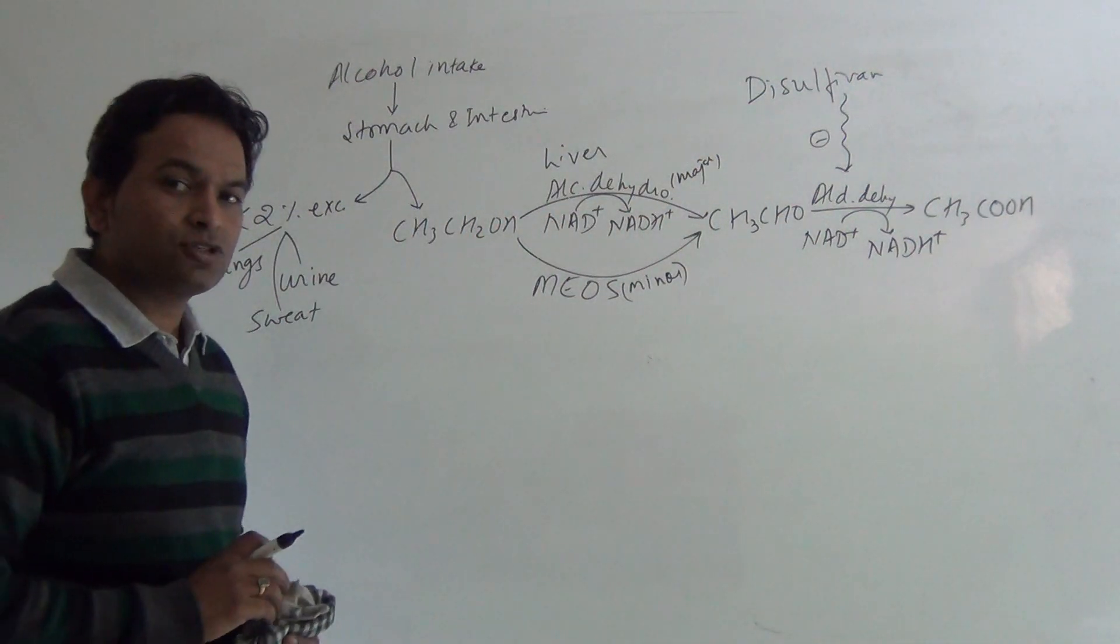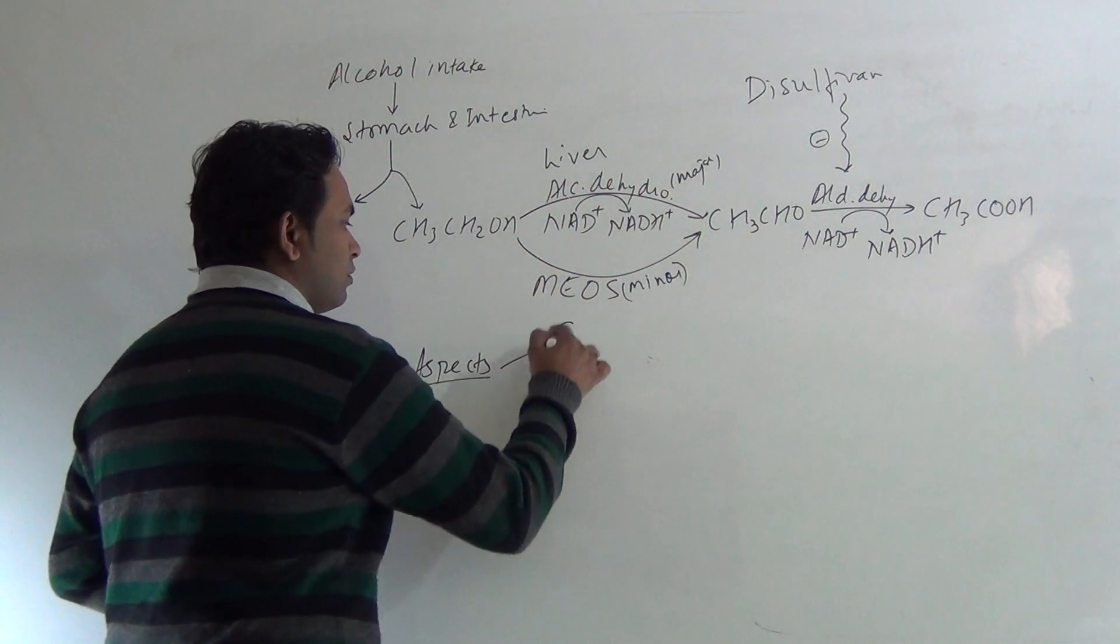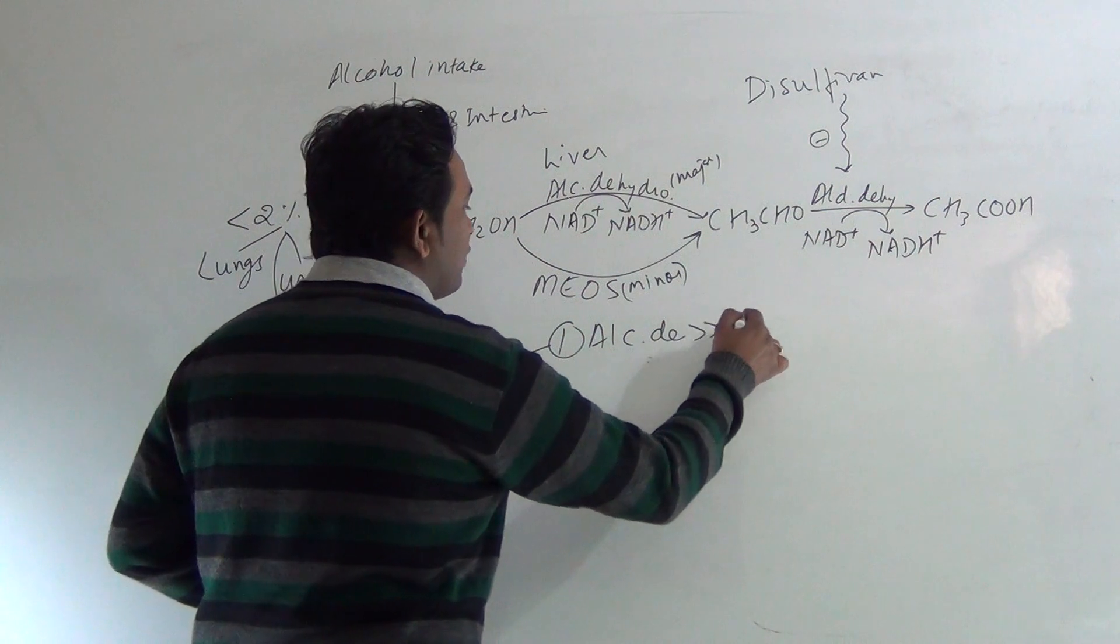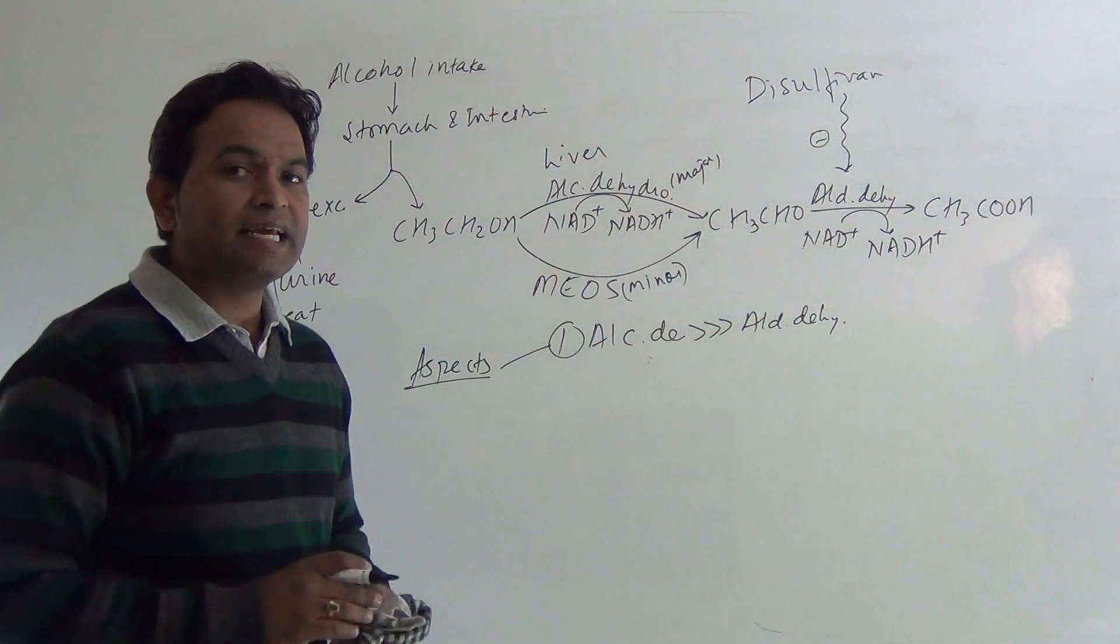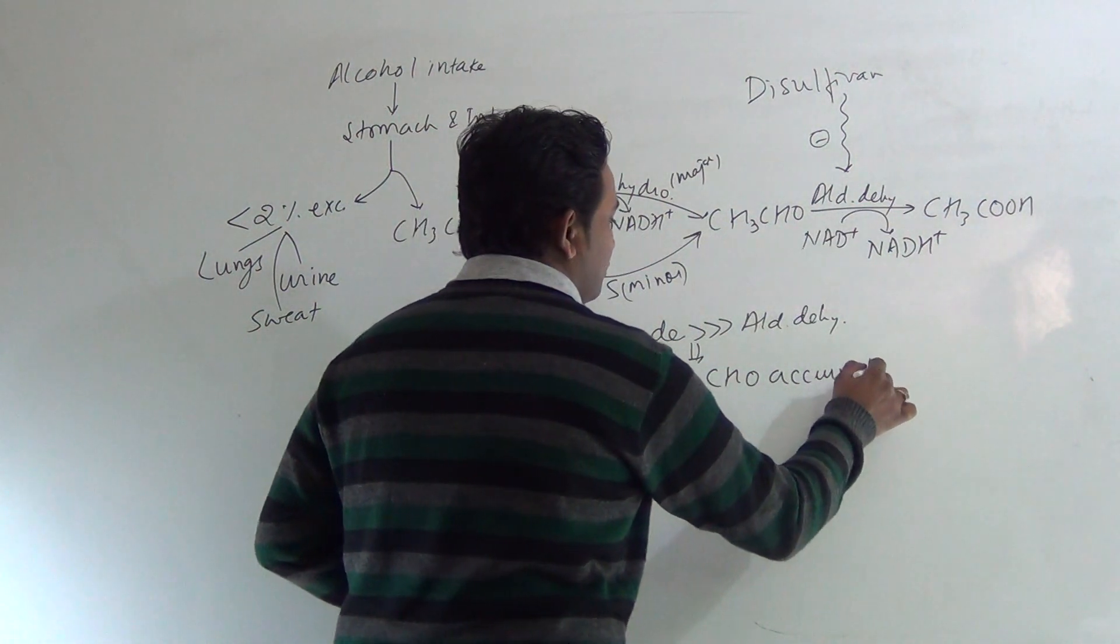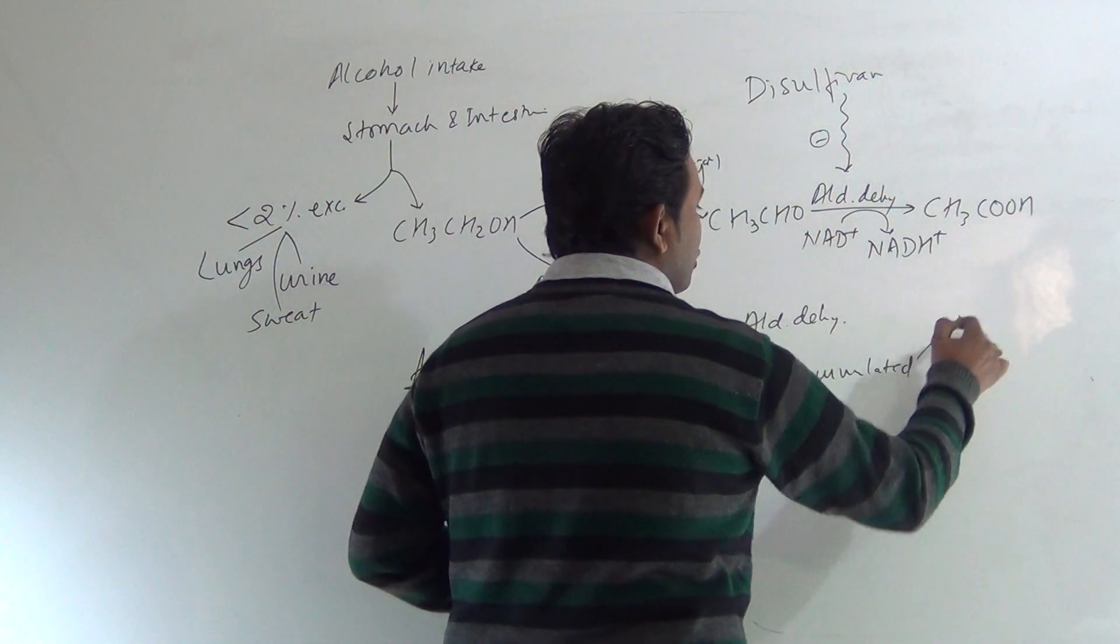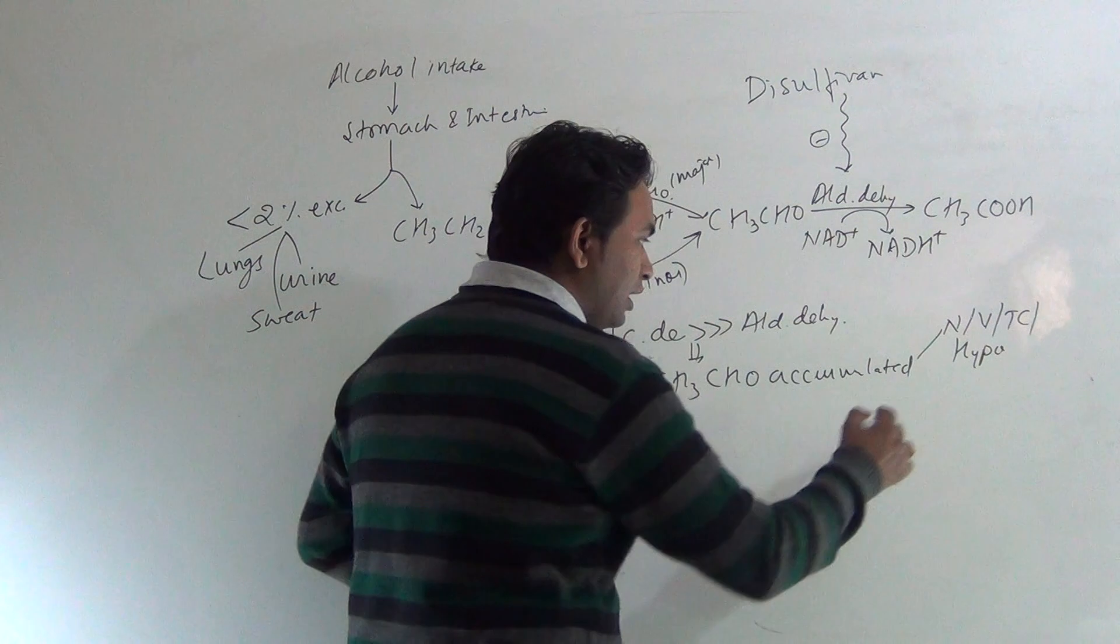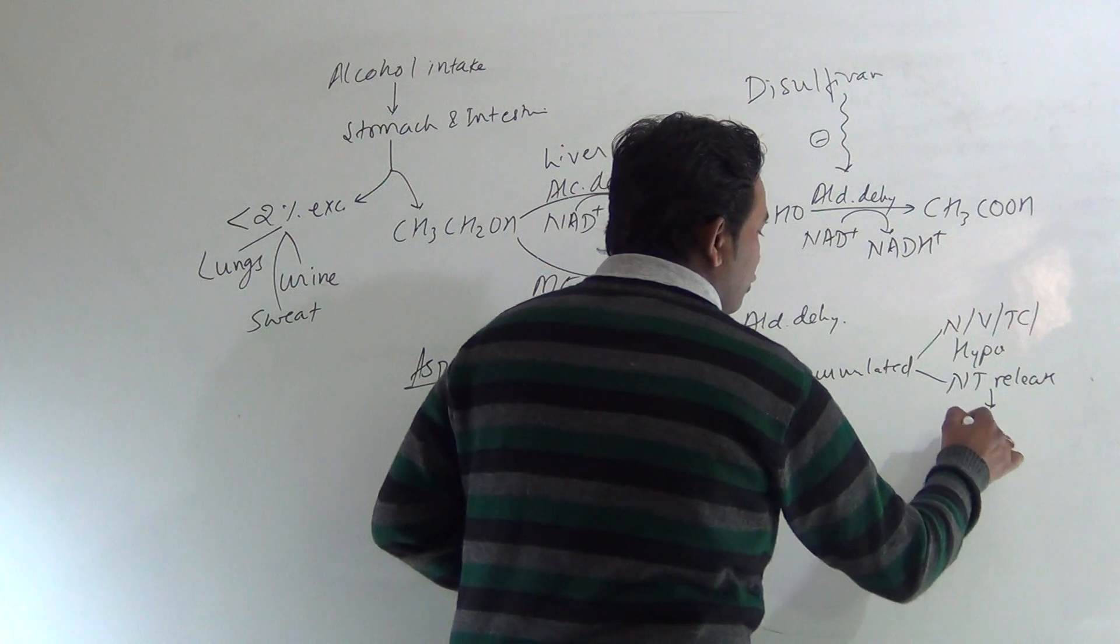There are two important aspects of alcohol metabolism. One is that the alcohol dehydrogenase enzyme works faster than aldehyde dehydrogenase, which means it will result in the accumulation of acetaldehyde. This accumulated acetaldehyde results in nausea, vomiting, tachycardia, hypotension. Even neurotransmitter release is inhibited, which results in neurological depression.